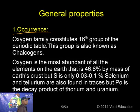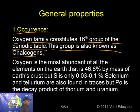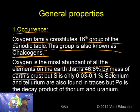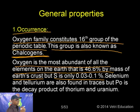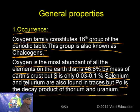First, occurrence. The Oxygen family constitutes the 16th group of the periodic table, also known as the Chalcogen group. Oxygen is the most abundant of all elements — 46.6% by mass of the earth's crust. Sulphur is only 0.03 to 0.1%. Selenium and Tellurium are found in traces, while Polonium is a decay product of Thorium and Uranium — it is radioactive.